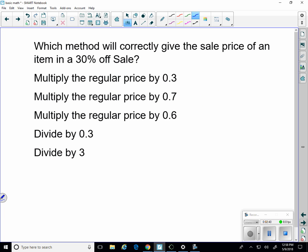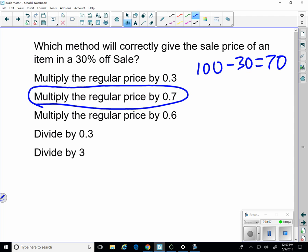Which method would correctly give the sale price of an item that's 30% off? Multiply the regular price by 0.3, multiply the regular price by 0.7, multiply the regular price by 0.6, divide by 0.3, divide by 3. Well, this one does it all in one step. You can multiply the regular price by 0.7. So you'd say 100 minus the 30%, so that's 70%. And you move the decimal one, two places, so it becomes 0.7 or 70. Neither of those zeros is critical.